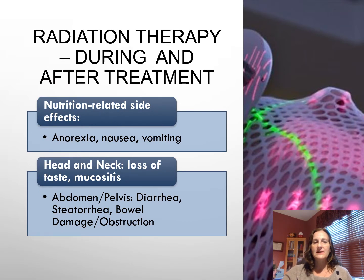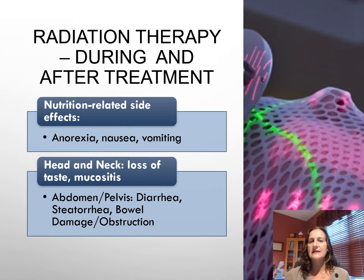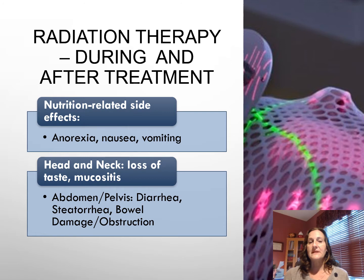Radiation therapy is another treatment. Nutrition-related side effects include anorexia, nausea, and vomiting, especially if radiation is in the upper part of the body — the head and neck — as well as loss of taste and mucositis. If radiation is geared toward the abdomen or pelvis, the patient could experience diarrhea. If it is lower toward the intestines, steatorrhea may occur, and the radiation could also result in a bowel obstruction or bowel damage.